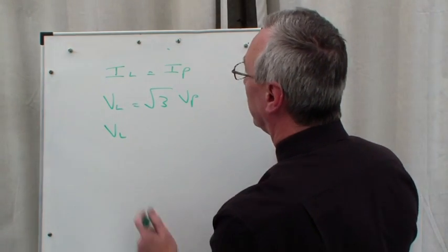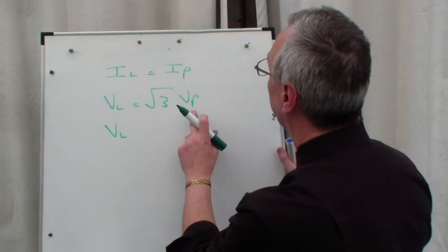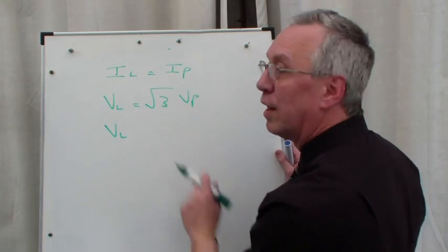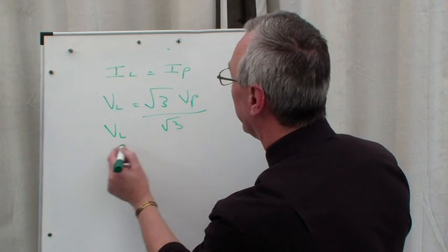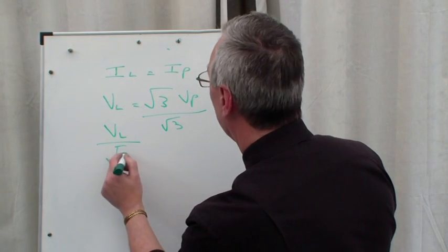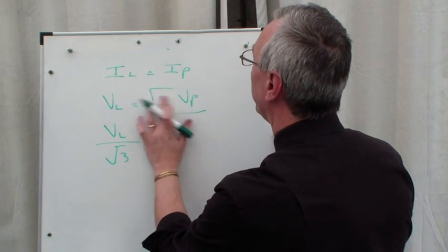So let's use the first rule of transposition. We want to find VP on its own. Let's get rid of the √3 by dividing by √3. Those √3's, √3 divided by √3, cancel out.